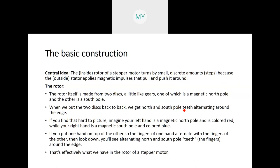The basic construction: motors have a rotor and a stator. The central idea is we require a rotor that moves in small steps by magnetizing the stator coils in sequence — first one phase, then the second phase, then the third phase. The inside rotor of a stepper motor turns by small discrete amounts, that is steps, because the outside stator applies magnetic impulses that pull and push it along.